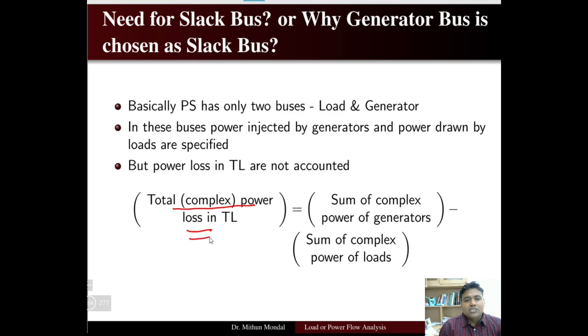The reason we need a slack bus is that a power system generally has two types of buses — load bus and generator bus. In these buses, the power injected by the generator and power drawn by the load are specified. However, the power loss in transmission lines is not accounted for. The total complex power loss in the transmission line is basically the power of the generator minus the power of the load.